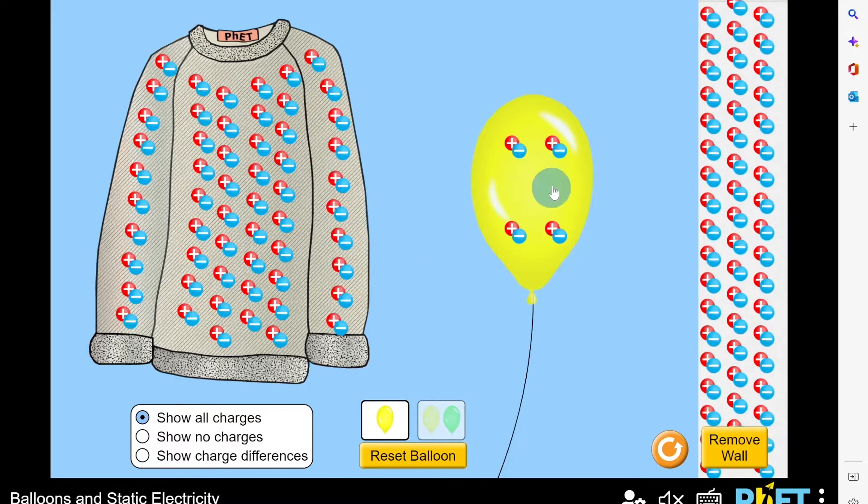We can also look at how the balloon is going to interact with this wall. So again, the balloon has a neutral charge right now and so does the wall. So if we bring the balloon close to the wall, you'll see nothing happens in terms of the charges interacting with each other. If I let the balloon go, nothing's going to happen.